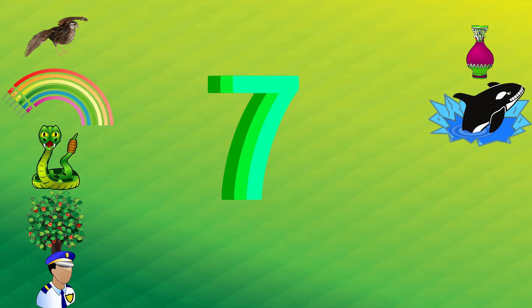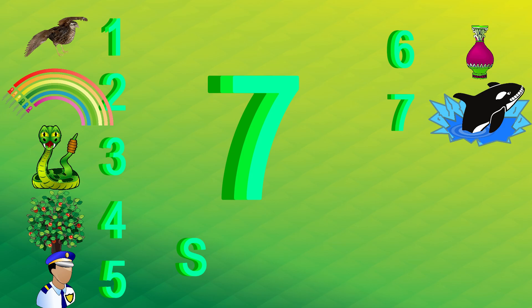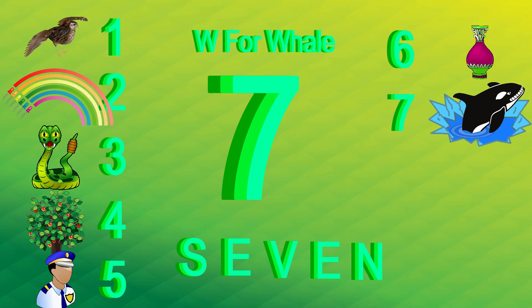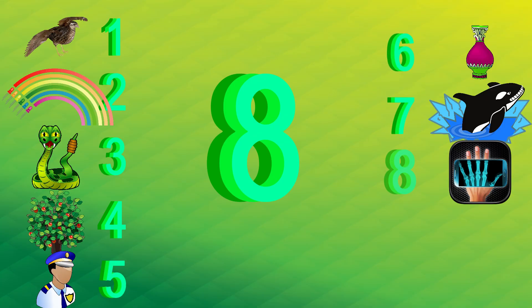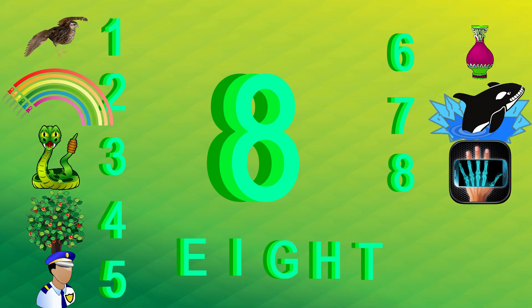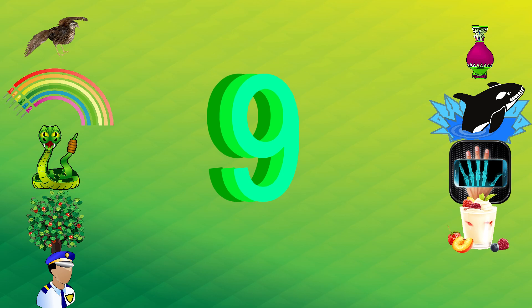7 - 1, 2, 3, 4, 5, 6, 7 - S E V E N. W for whale. 8 - 1, 2, 3, 4, 5, 6, 7, 8 - E I G H T. X for x-ray. 9.